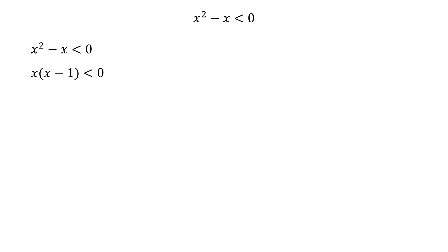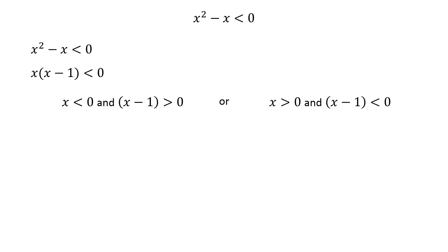For the product of these two factors to be less than 0, one of them has to be positive and the other one has to be negative. This implies that either x is less than 0 and x minus 1 is greater than 0, or x is greater than 0 and x minus 1 is less than 0.